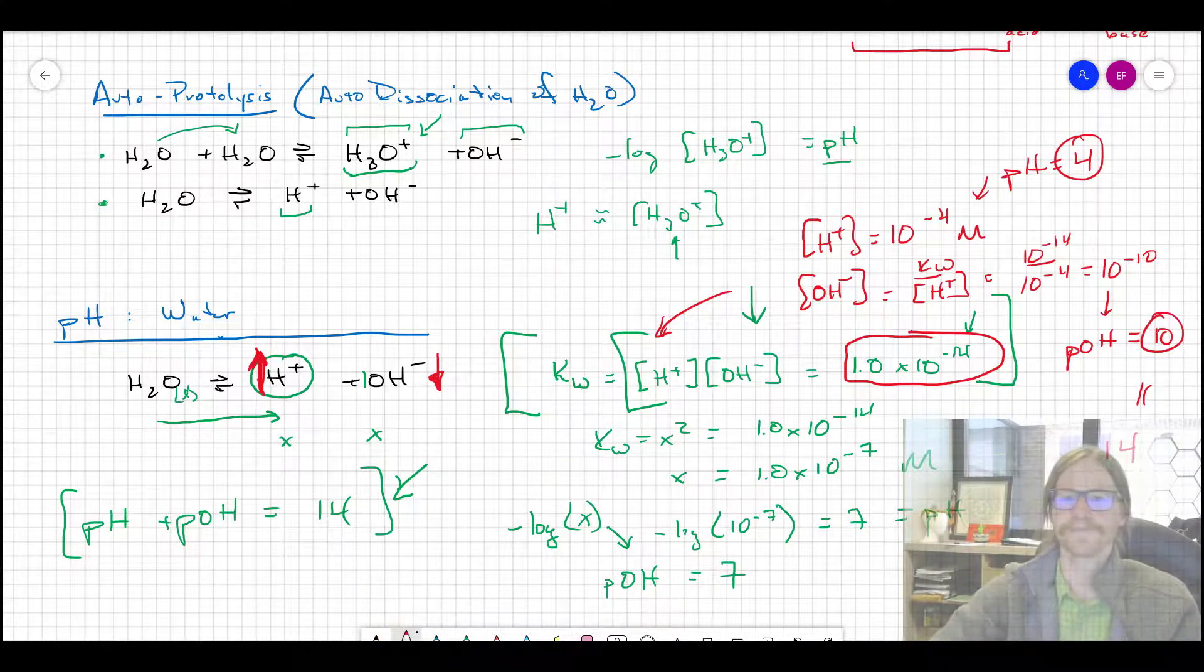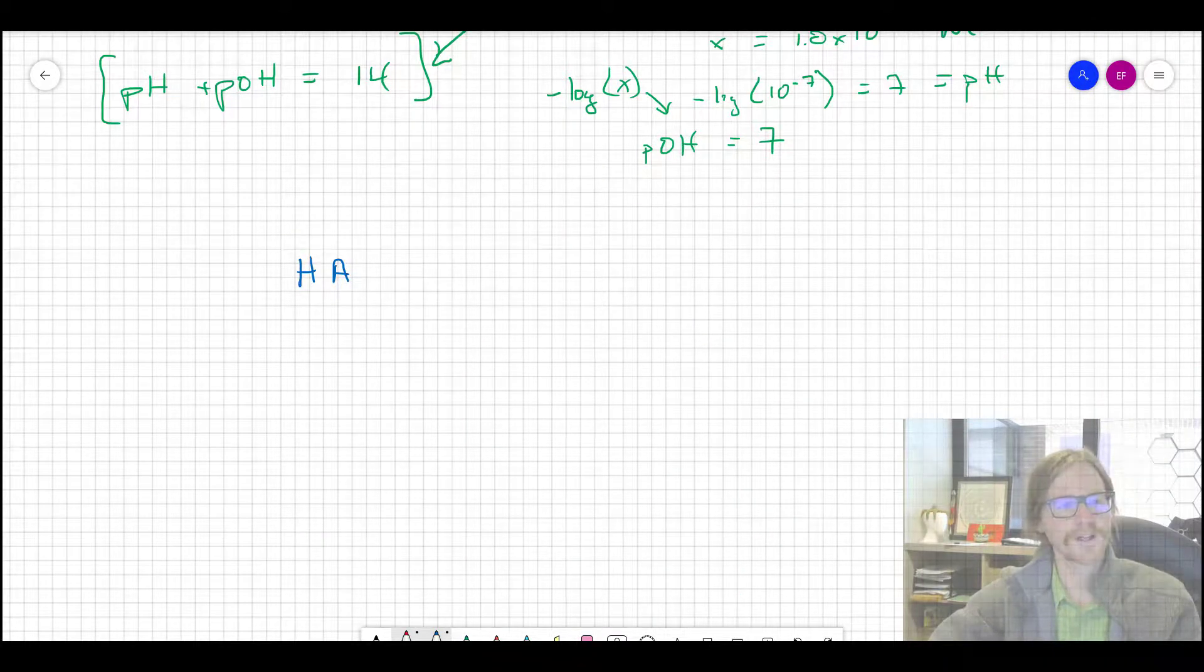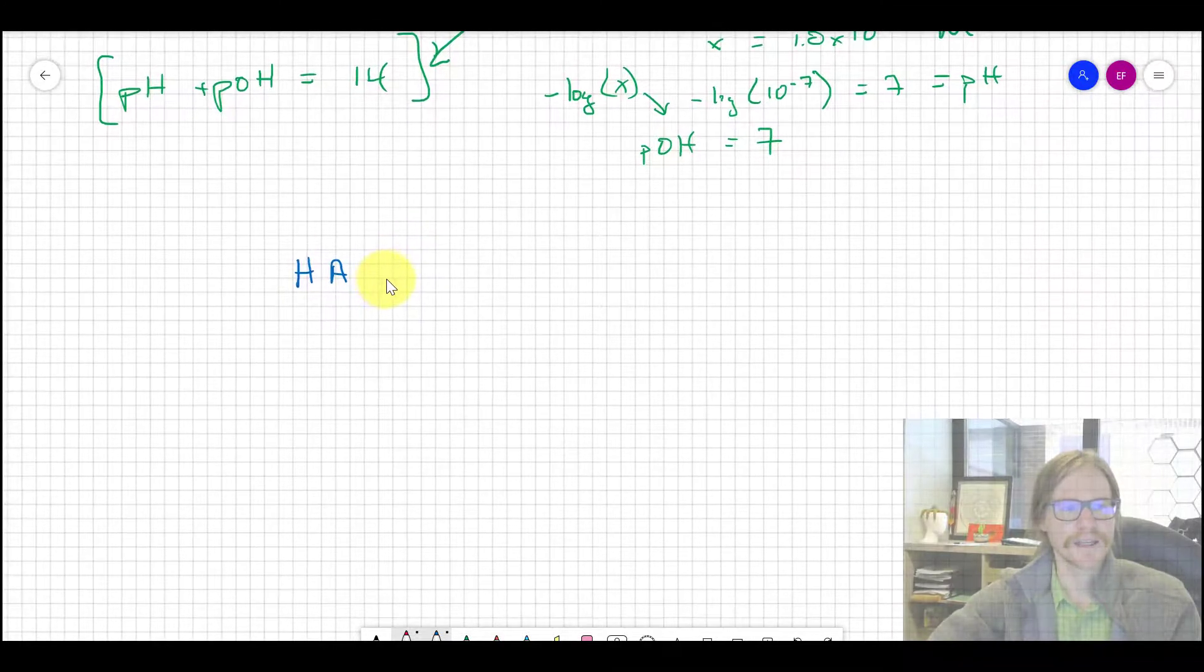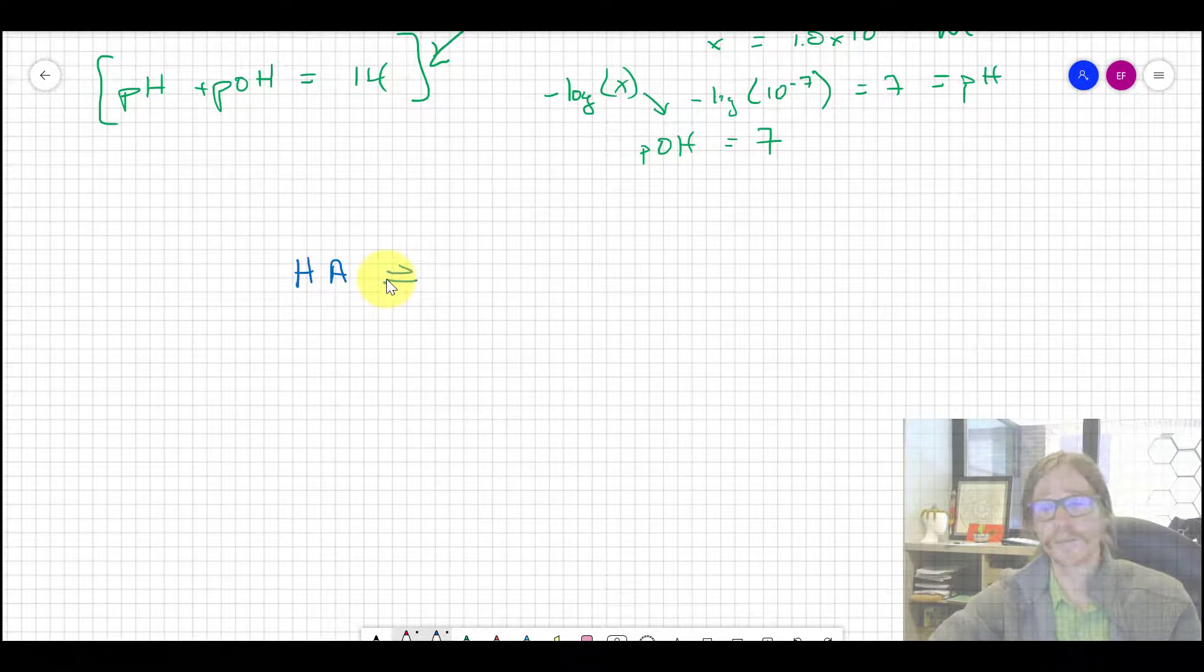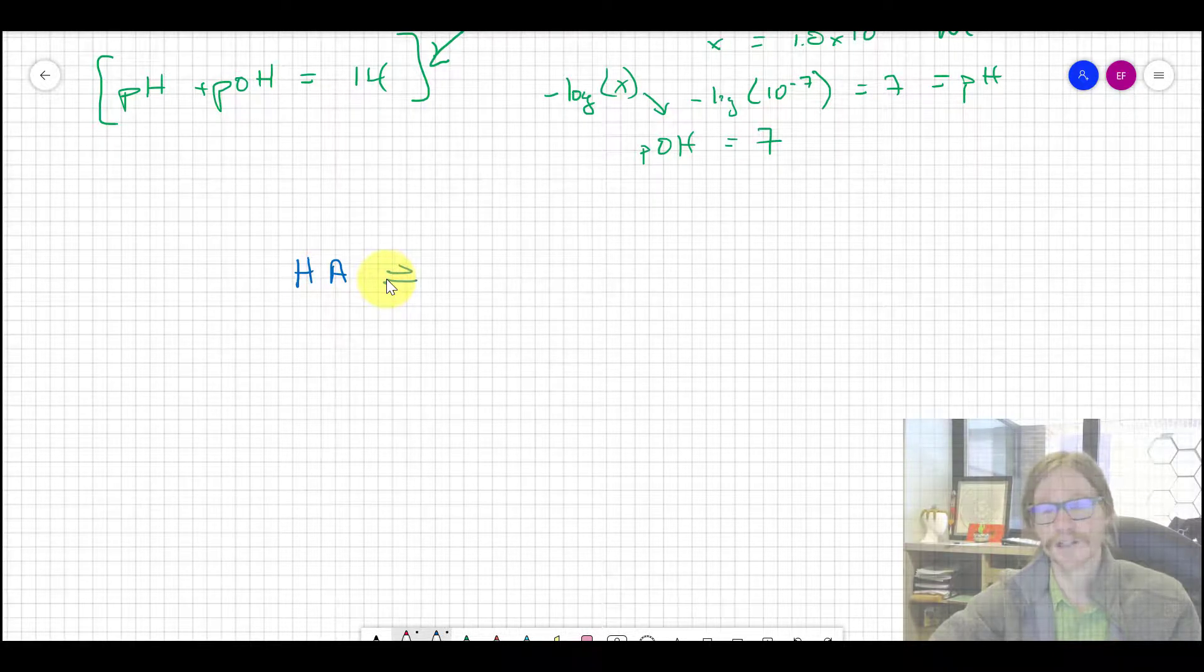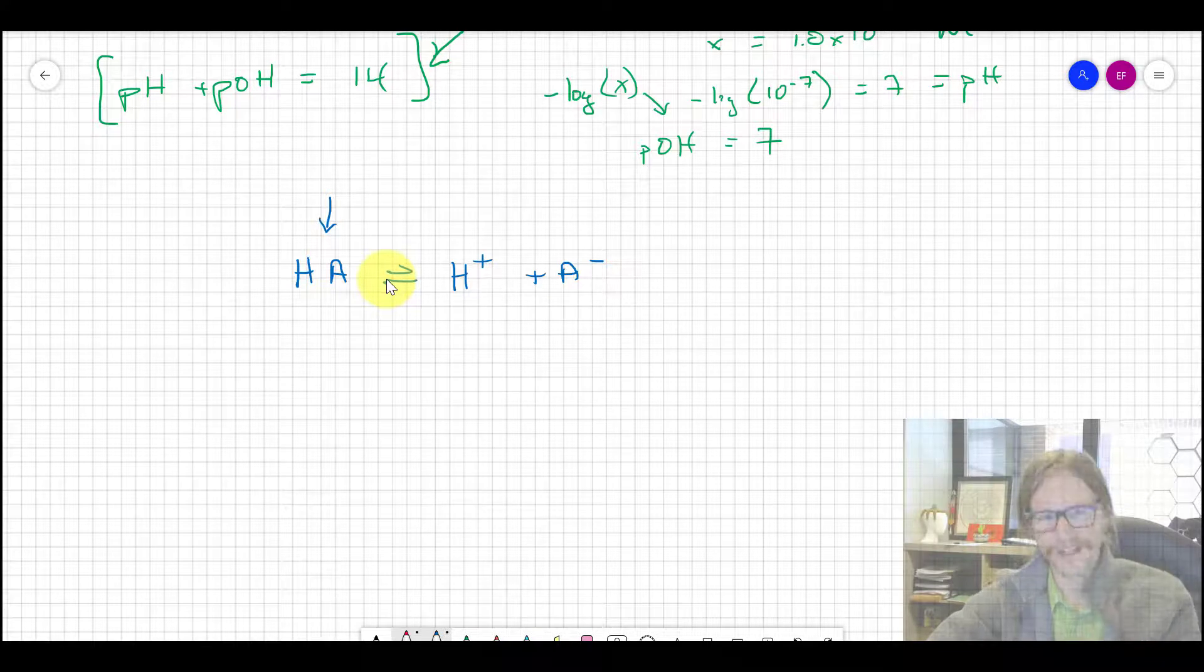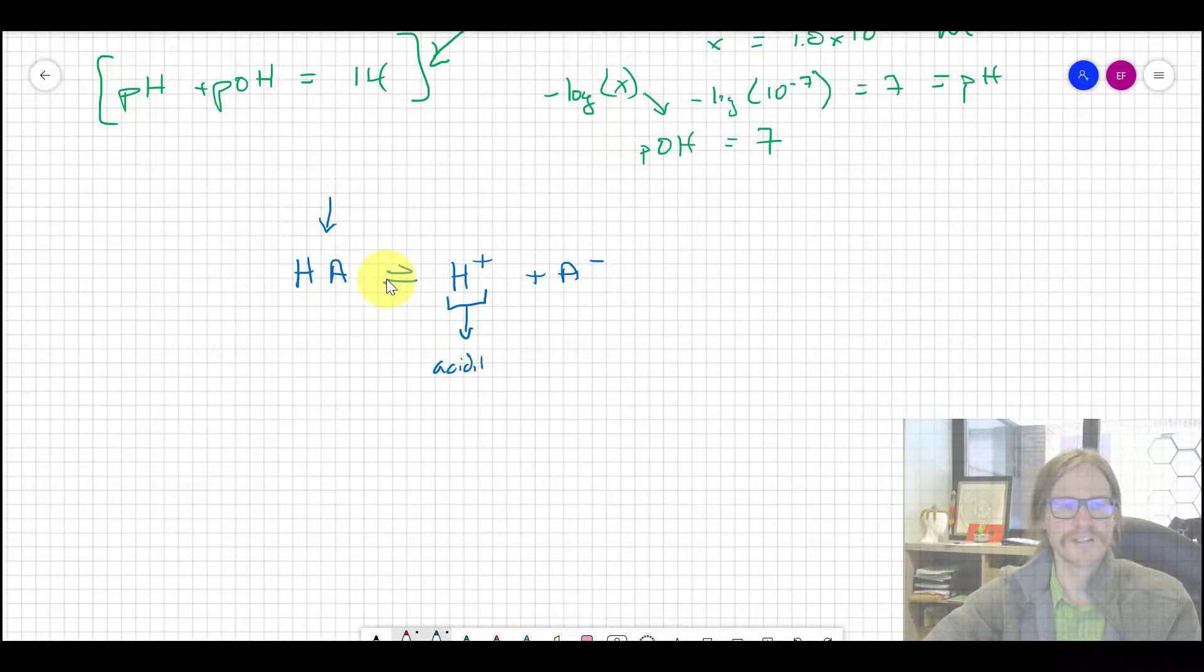In this class we'll use nomenclature for acids called HA, often A being a generic anion - could be Cl-, could be bromide, whatever. For a strong acid, the proxy for strength here is the equilibrium constant - to what extent does this reaction proceed towards products? This would dissociate to make hydrogen ion plus A-. The HA is the delivery of the acid molecule, but the H+ is really the metric of acidity - it is what an acidic thing is.